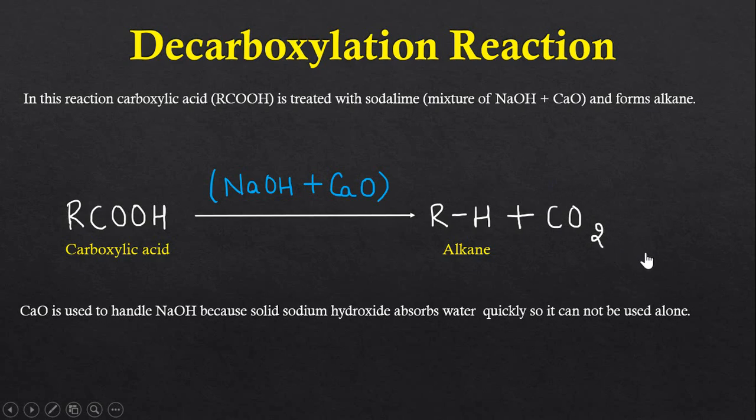Calcium oxide is used to handle sodium hydroxide because solid sodium hydroxide absorbs water very quickly, so it cannot be used alone. Sodium hydroxide is known as caustic soda, and calcium oxide is known as quick lime. That's why we call this reagent soda lime. Now let us discuss the mechanism of this reaction.